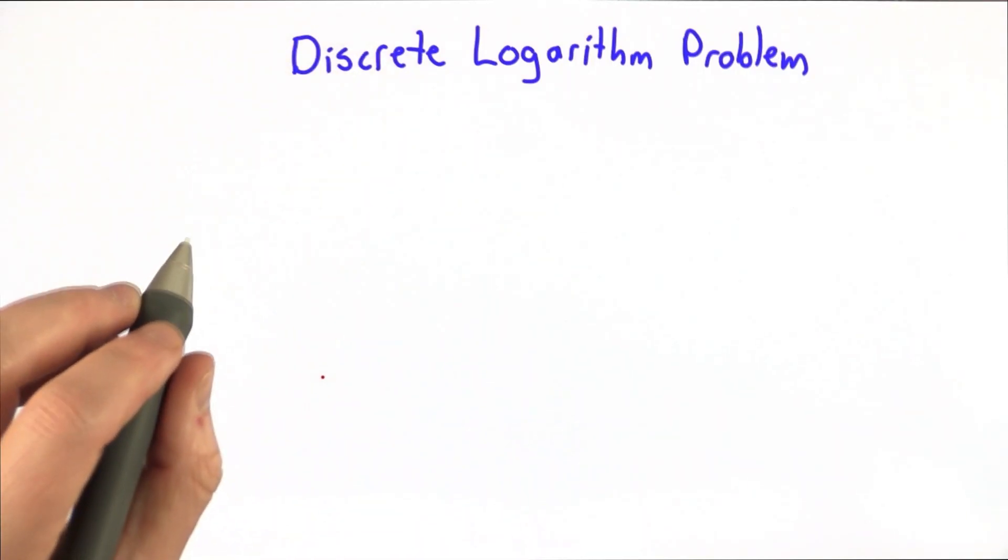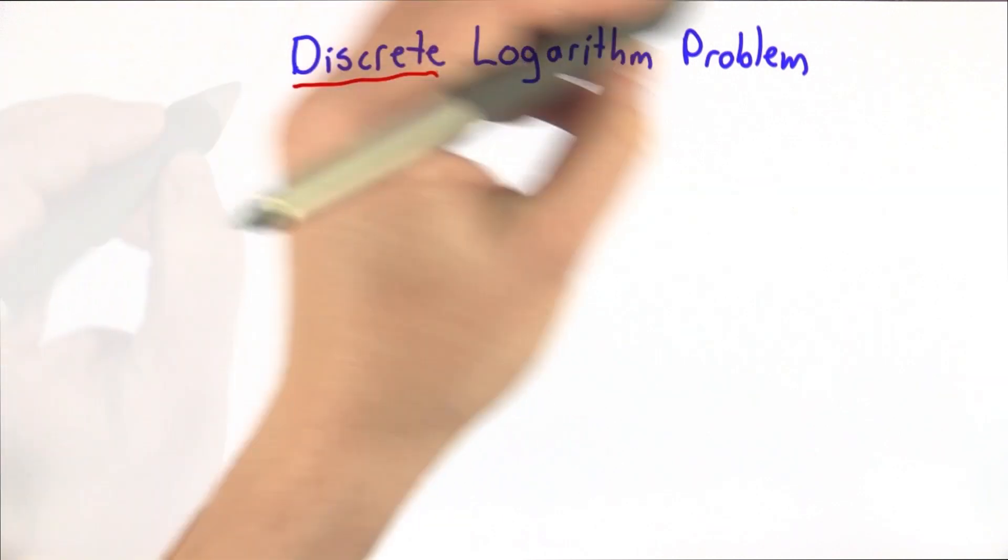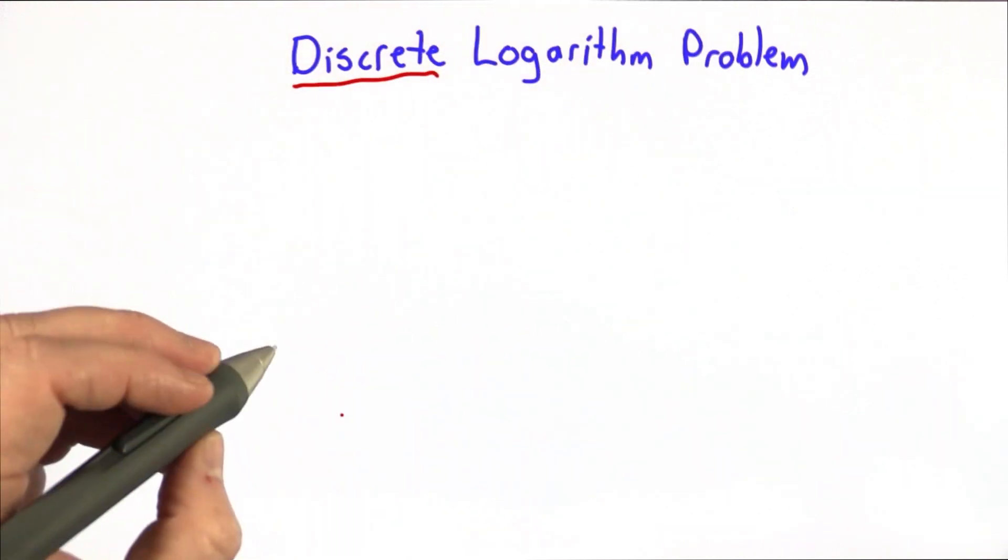The hard problem that is closely related to the Diffie-Hellman security property is the discrete log problem. Discrete logs are like continuous logs, but over a discrete group.